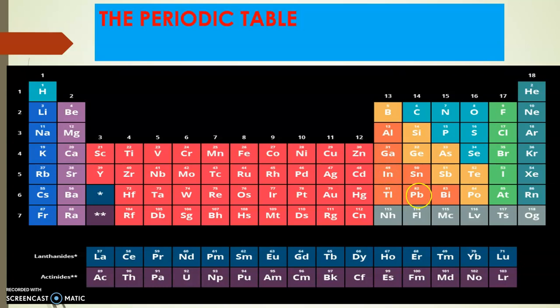Let's speak on oxygen. Oxygen is in group 6, meaning there are six valence electrons — six electrons in the outer shell. So the valence number of oxygen is 2, because it only needs two more for it to attain stability. Oxygen has 8 electrons total.